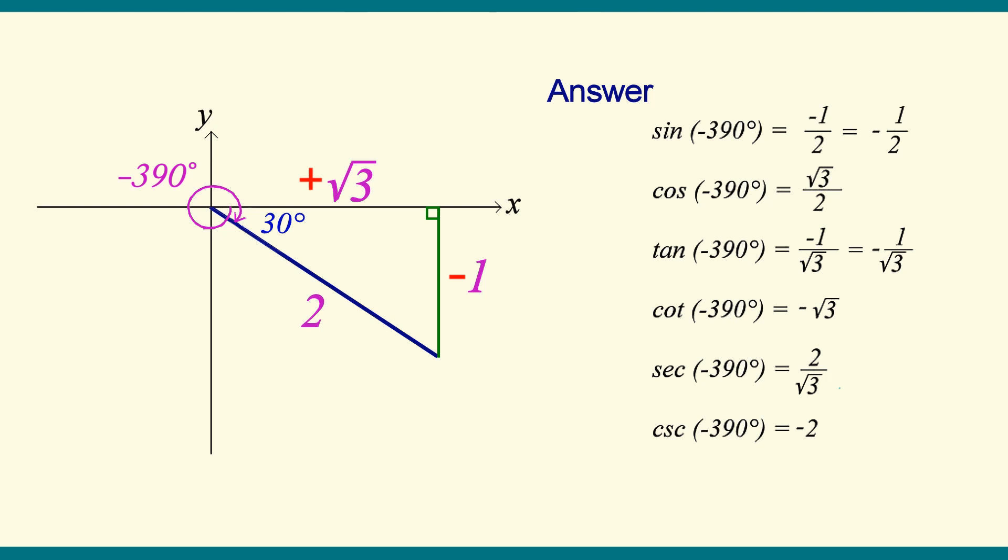We can see from this example that the cosine is always going to be positive in the fourth quadrant.